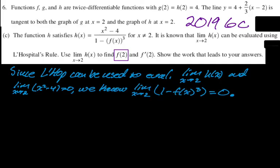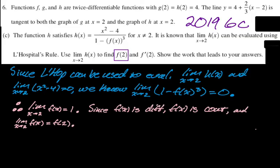Now I need to explain why that's the value of F(2). F is twice differentiable — that's given — so F is differentiable, and since F is differentiable, F is continuous. If F is continuous, the limit as x approaches 2 of F(x) equals F(2). Therefore F(2) = 1. We found F(2).